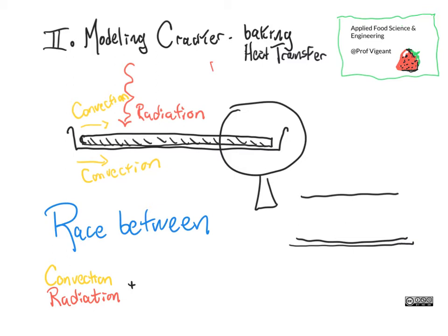We also have convection imparting energy through the surfaces — again through the top surface, possibly through the bottom surface through the cookie sheet. Conduction, shown in green in the zoomed-in view, is moving from the cookie sheet into the cracker, and it's also how energy moves inside the cracker itself from its upper surface toward the interior.